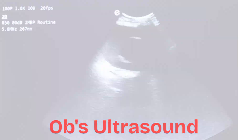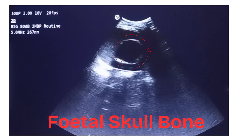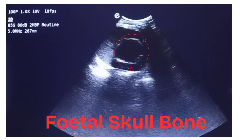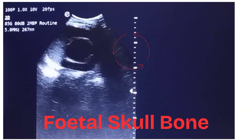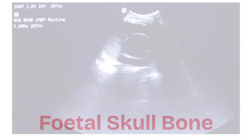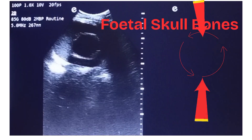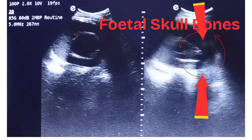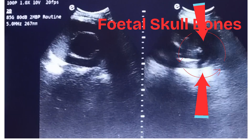Fetal head can be seen here within the red arrows. Fetal skull bones can be seen here, with both arrows indicating the fetal skull bones.